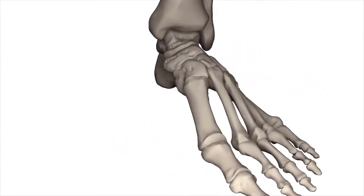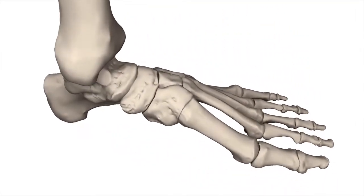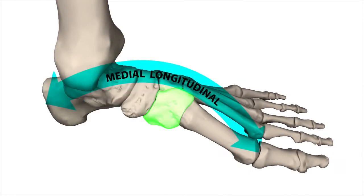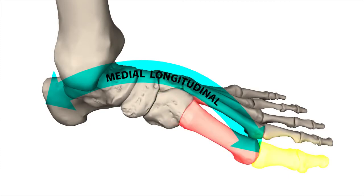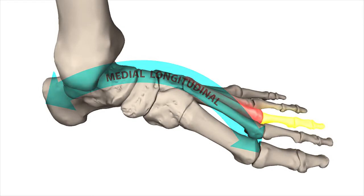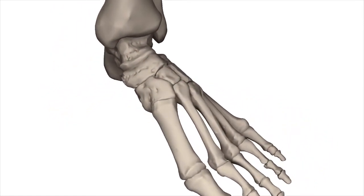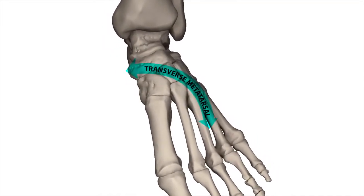The medial longitudinal arch consists of the following bones: calcaneus, talus, navicular, medial cuneiform, intermediate cuneiform, lateral cuneiform, first metatarsal, second metatarsal, and third metatarsal. The transverse metatarsal arch is situated at the posterior of the metatarsal bones, creating a partial domed arch on a single foot and a complete arch when the feet are placed in apposition.